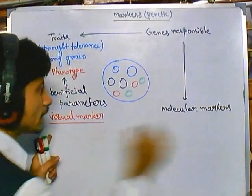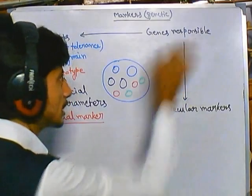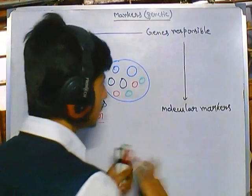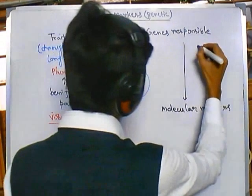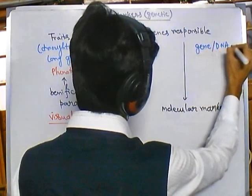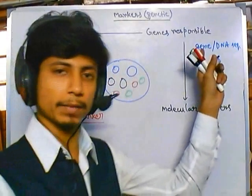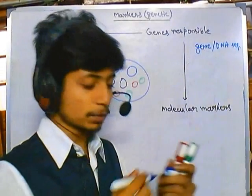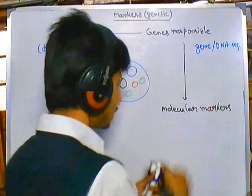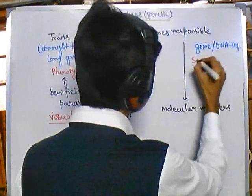We can look for physical visual markers and then scan for molecular markers, which are gene markers — nothing but gene or DNA sequences. The DNA sequences we can get as markers are called simple sequence repeats.